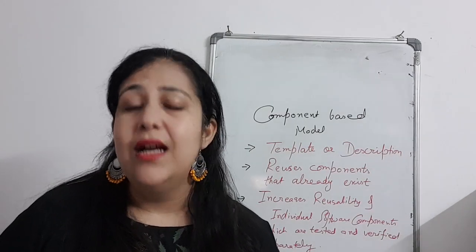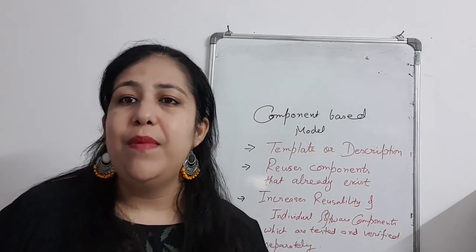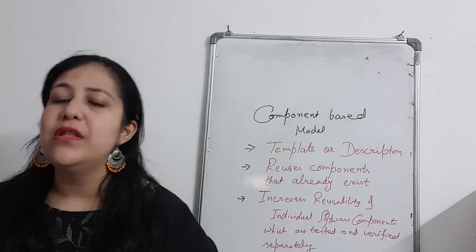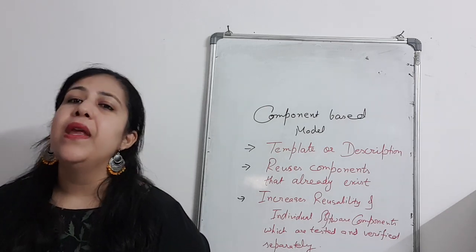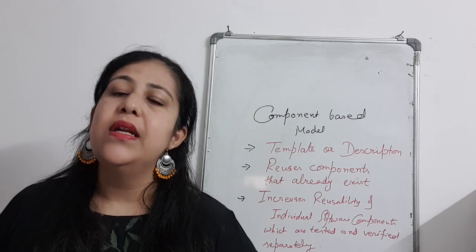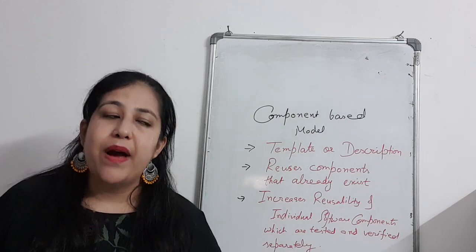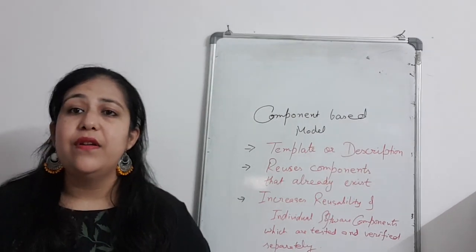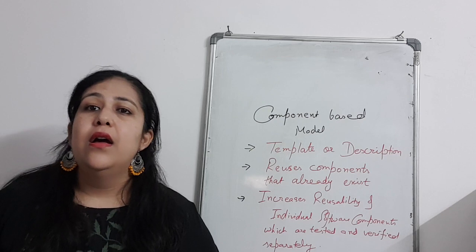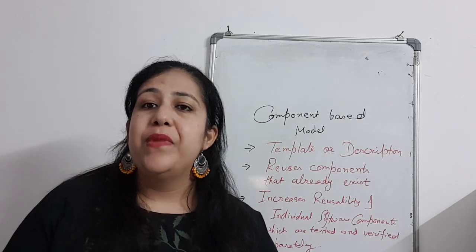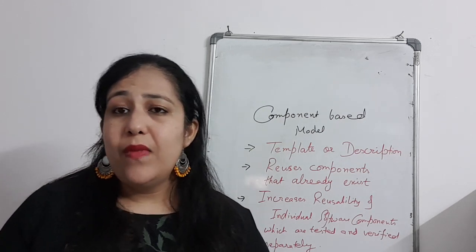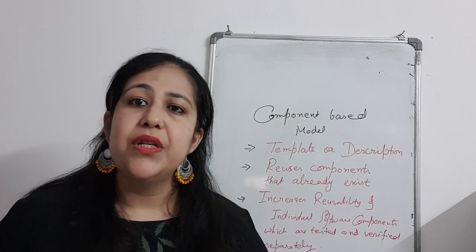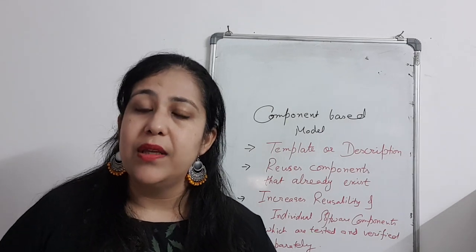So that's the very basic model of software engineering. All the models we have covered — including the waterfall model, the spiral model, the component-based model, the incremental model, and the evolutionary model — these are all your basic software engineering models.